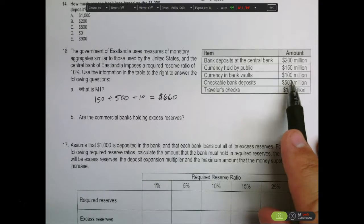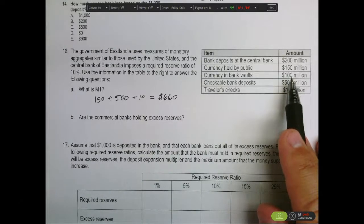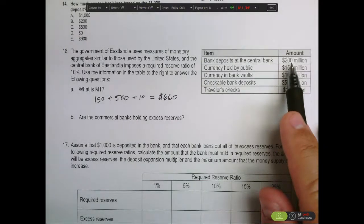The fact of the matter is that they haven't done that. They're holding $100 million in the bank vault, and they're holding another $200 million at the central bank.